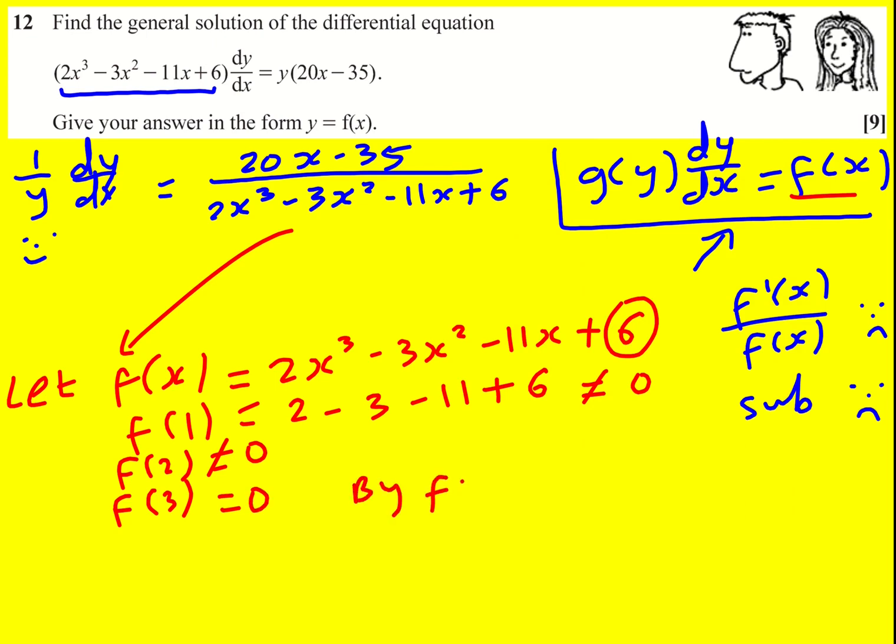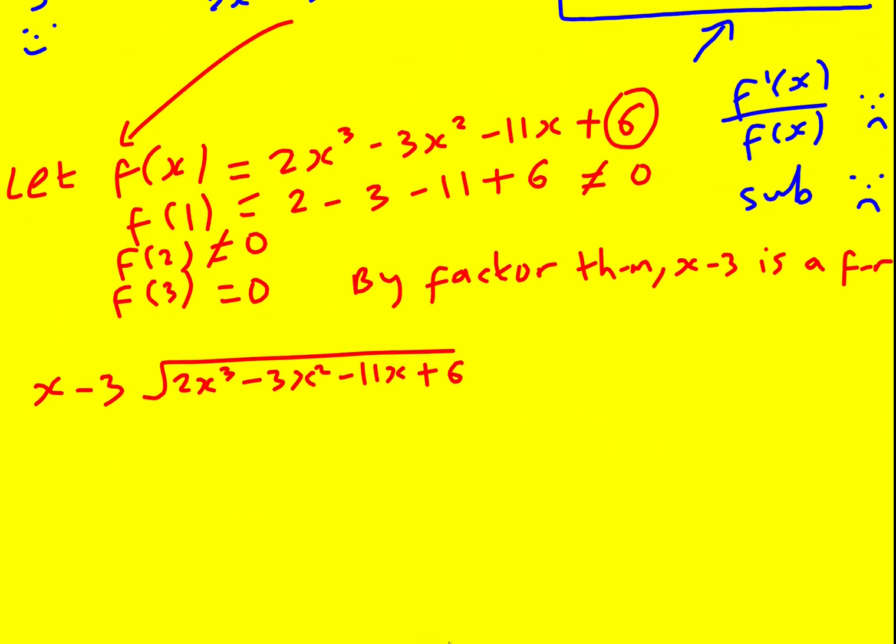So that means by the factor theorem x minus 3 is a factor. We could do a polynomial division. Okay, let's see what we get. So I'm not going to go through this in full detail. I'm going to assume that you recognize polynomial division. Divide, multiply back through. If you're not confident with it, there are other videos which show it in more detail. 3x squared. Bring the 11x down. Then plus 3x. Subtract. It's going to give minus 2x plus 6. So minus 2 and that all checks out.